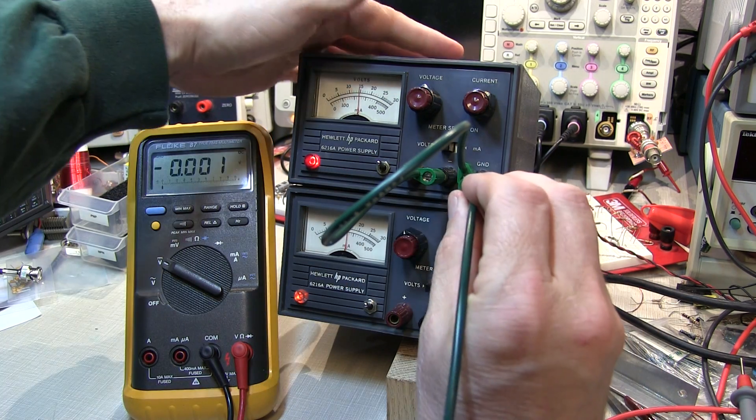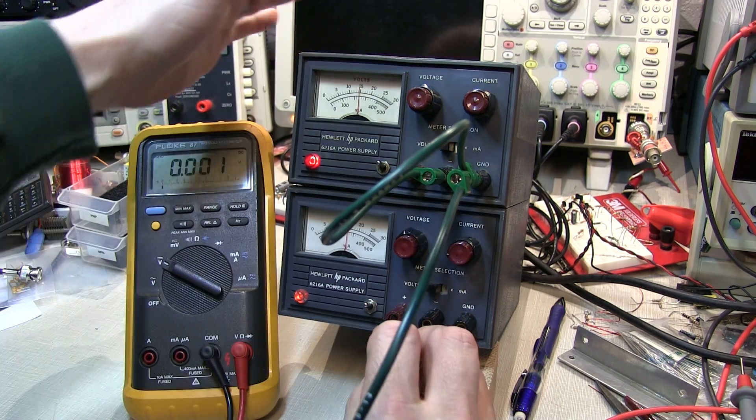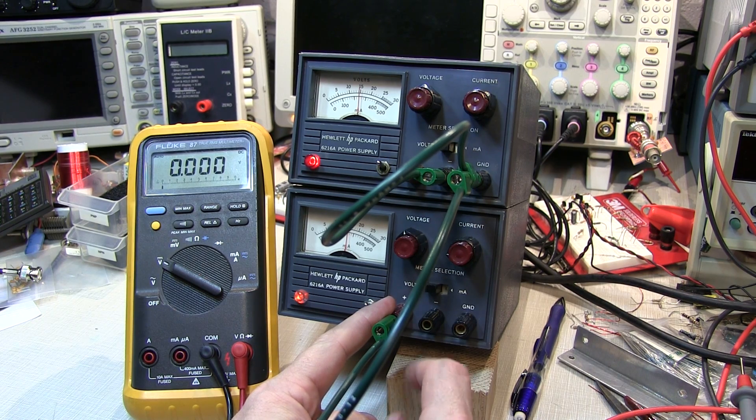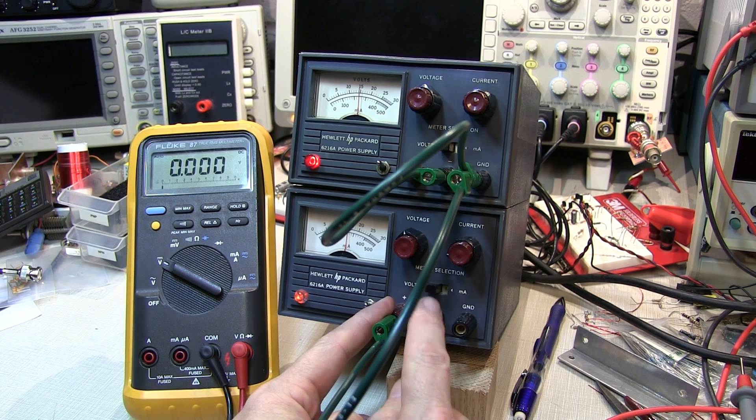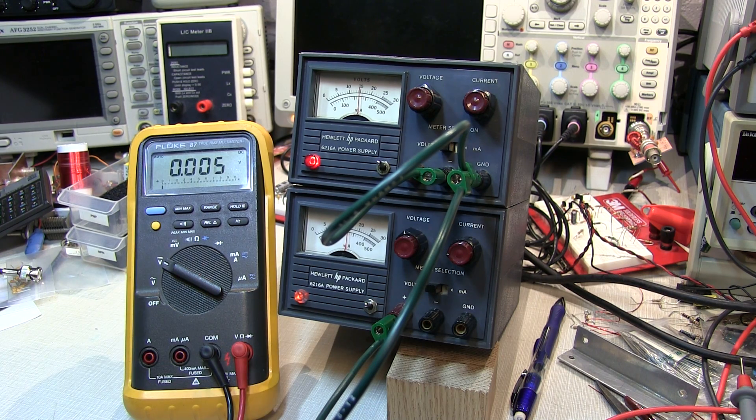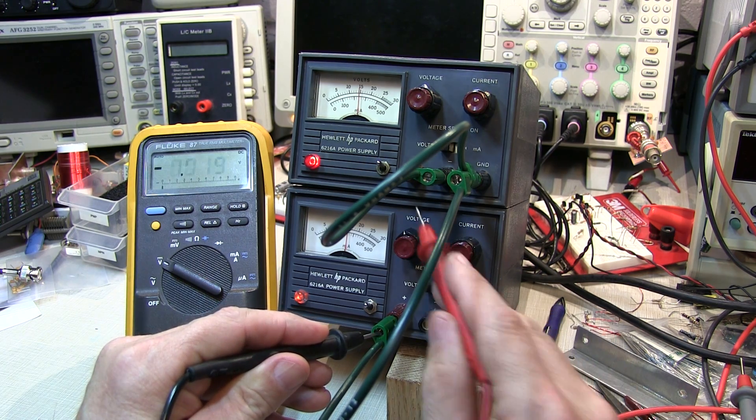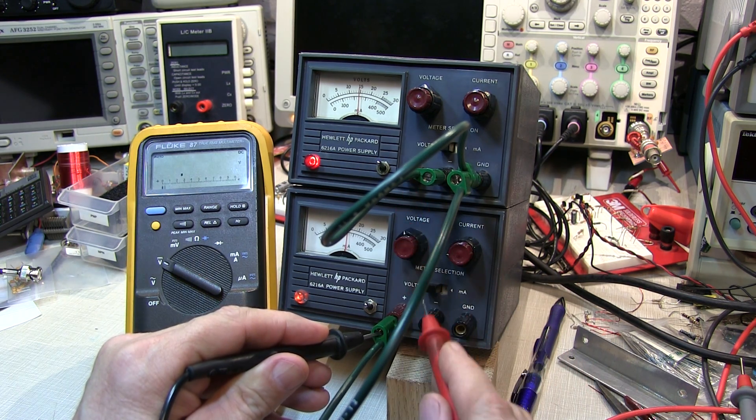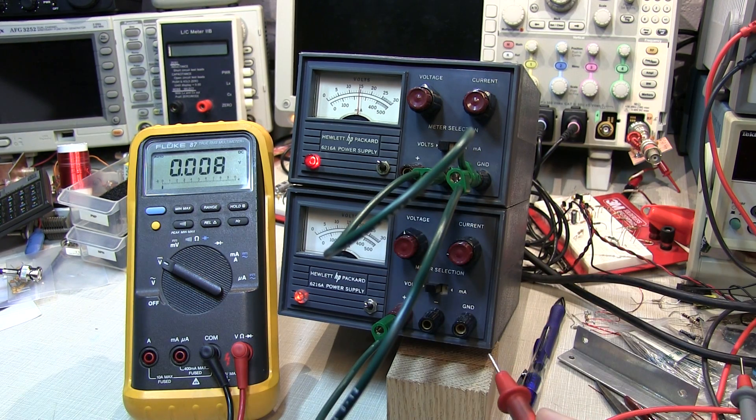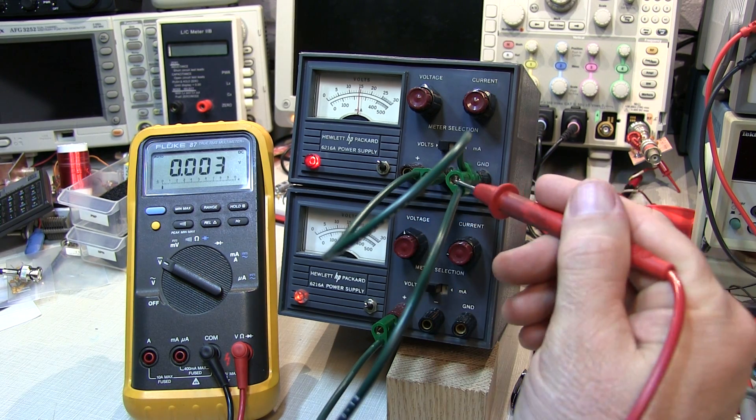But now we'll take that ground connection and also connect it to the positive terminal of the lower supply. So that's going to be at ground, but we know this terminal is also 15 volts above the negative terminal for that power supply. So with respect to ground, this voltage is going to be 15 volts negative. So now I've got a plus and minus 15 volt supply and a common ground. So those are the three connections you'd take to your op amp circuit. Plus 15, minus 15, and ground.